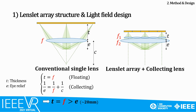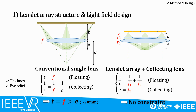Therefore, both the thickness and the eye relief become related to the focal length of the single lens, and it ends up with a thickness that should be much thicker than the eye relief. In contrast, in our design, the two independent components perform two functions. That is, the thickness and the eye relief are no longer related to each other. Therefore, the thickness can be designed to be much thinner than the eye relief.